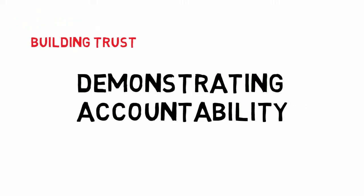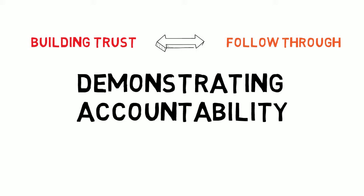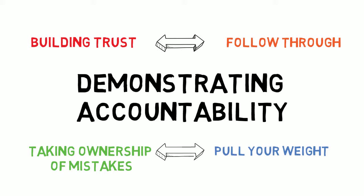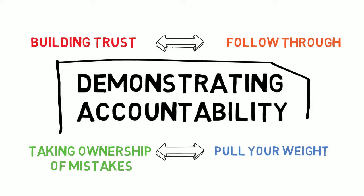Much of demonstrating accountability within a team involves building trust between team members and making sure that you follow through on your promises and commitments. Trust allows team members to be more honest in their practices and to rely on each other. Accountability also stems from taking ownership of your own mistakes or missed work by pulling your weight on the team and making sure that the team knows that they can count on you. Your team will trust you and hold you accountable to your promises.